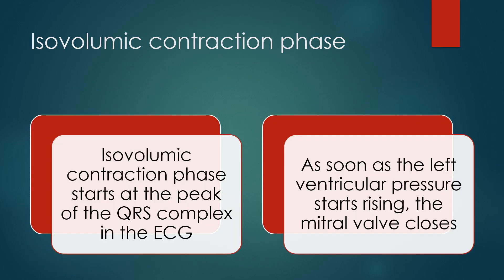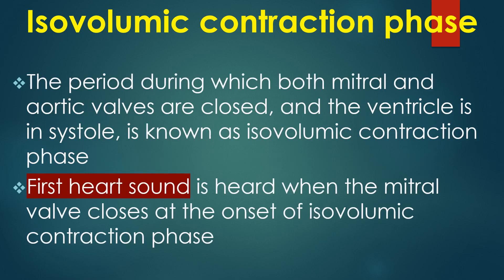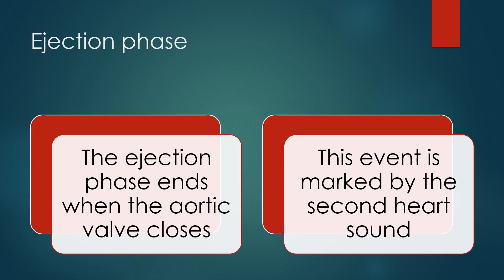Isovolumic contraction phase starts at the peak of the QRS complex on the ECG. As soon as the left ventricular pressure starts rising, the mitral valve closes, and after a short while, when the LV pressure exceeds aortic diastolic pressure, the aortic valve opens. The period during which both mitral and aortic valves are closed and the ventricle is in systole is known as the isovolumic contraction phase. In the ejection phase, blood is ejected into the aorta once the aortic valve opens. After an initial period of rapid ejection, while the ventricle continues to contract, there is a period of reduced ejection when the ventricle starts relaxing. The ejection phase ends when the aortic valve closes, marked by the second heart sound.